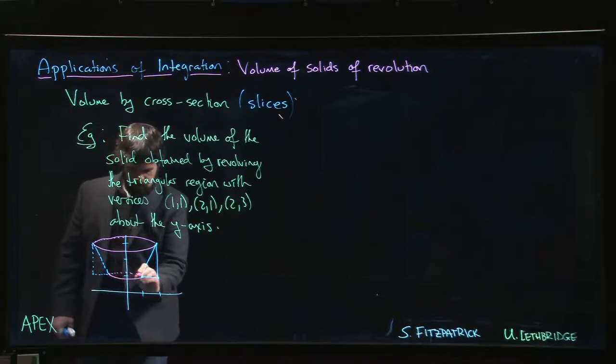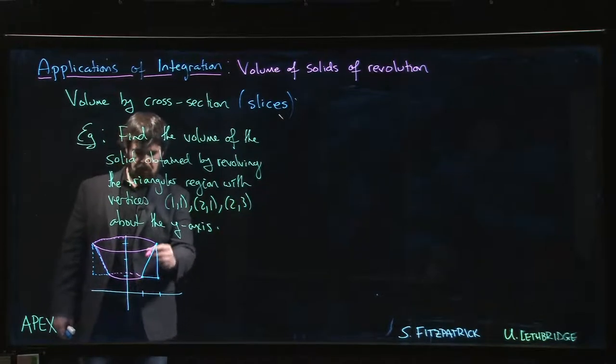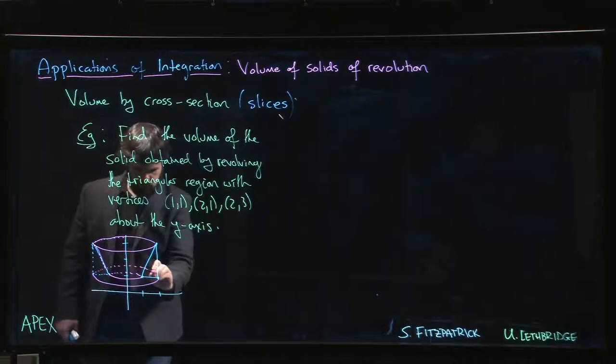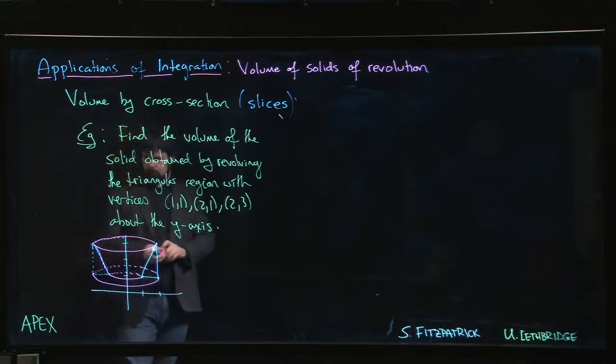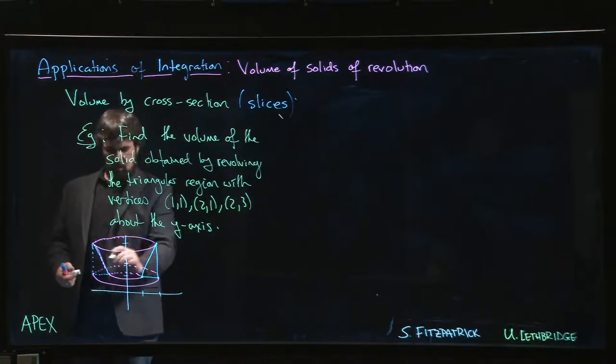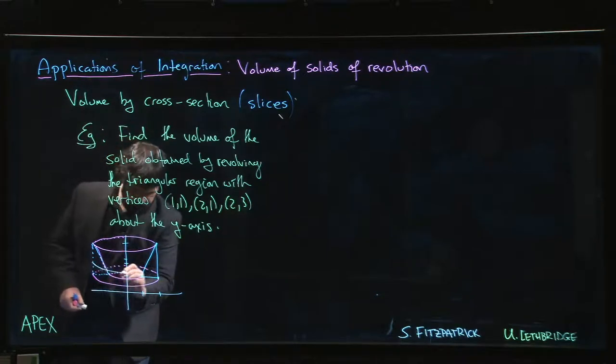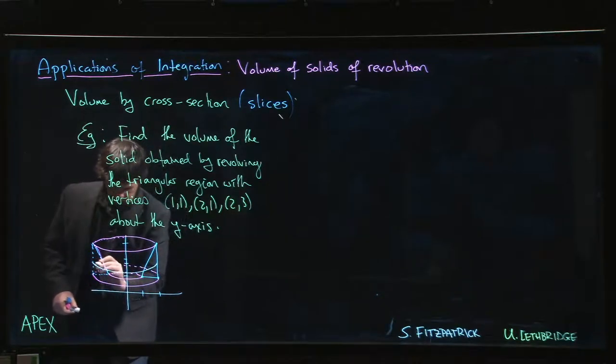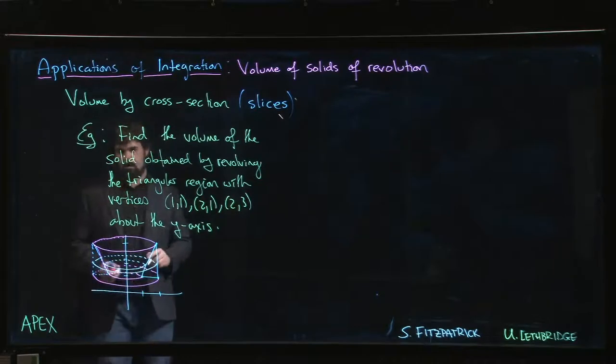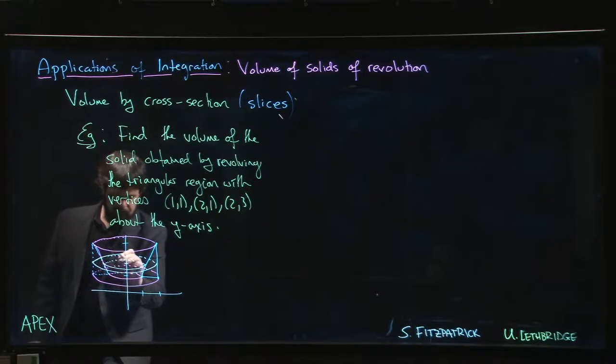We have this conical region in the middle that's hollow and then the solid around the outside. So that's what our region looks like. We choose some y value in between one and three and we say, well what does a typical washer look like? So typical washer goes around, comes in behind, and then we have to cut out that bit in the middle. So there's our washer.